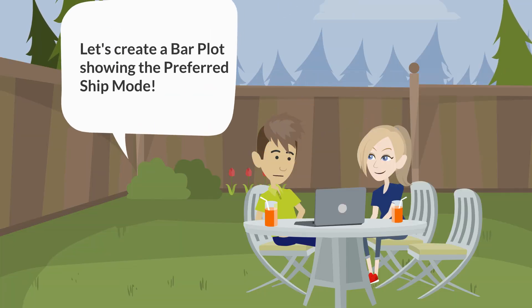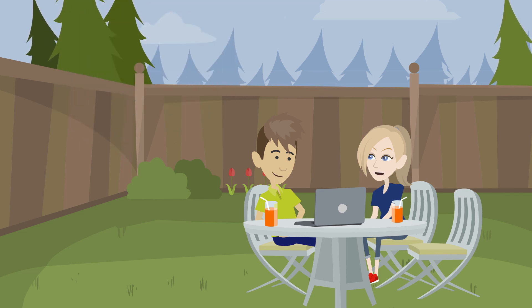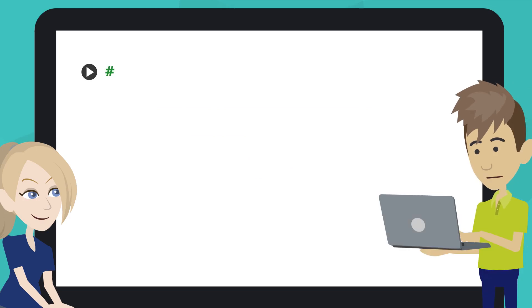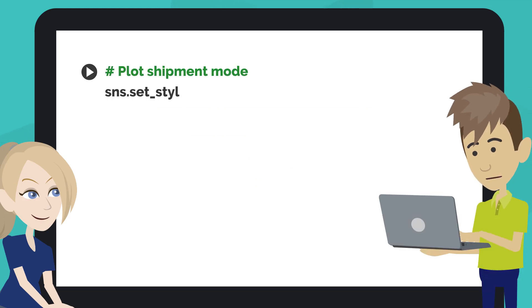Let's create a bar plot showing the Preferred Ship Mode. Alright! Type the code like this into the next code cell of your notebook.